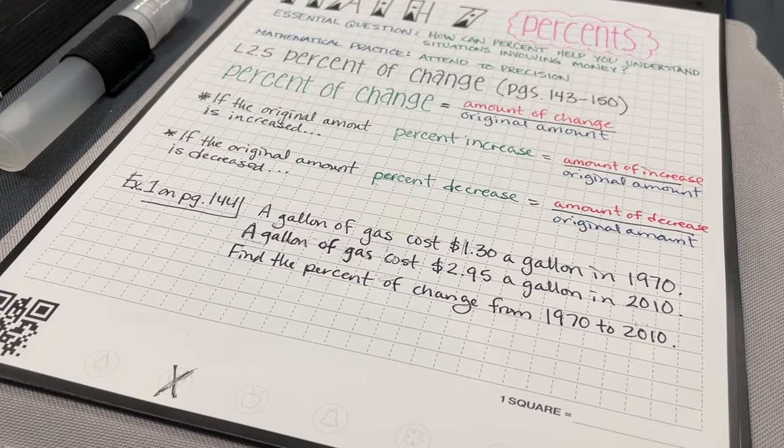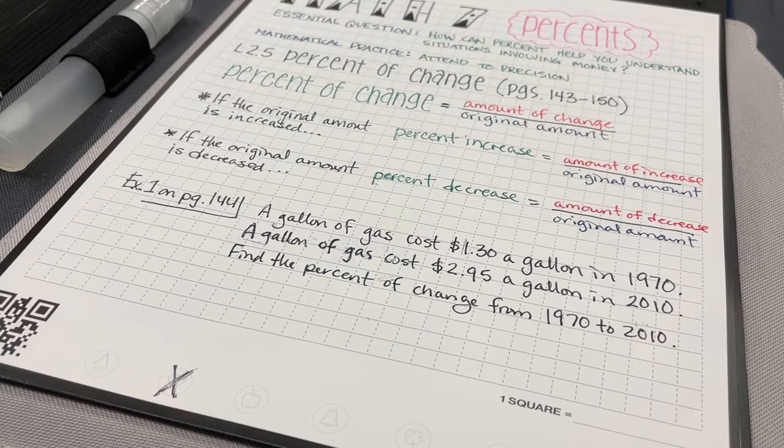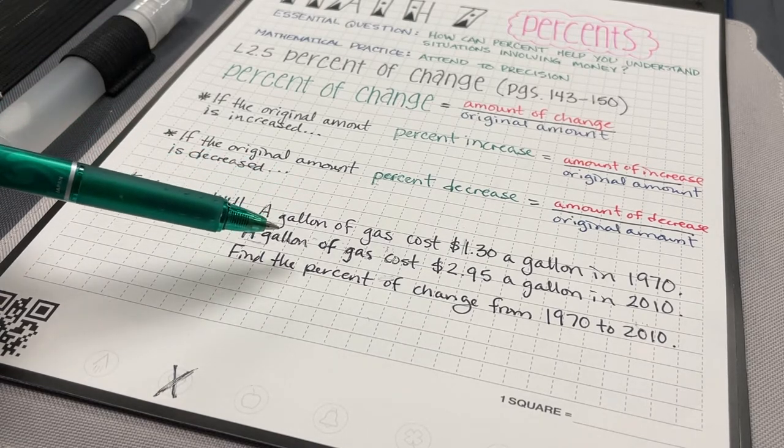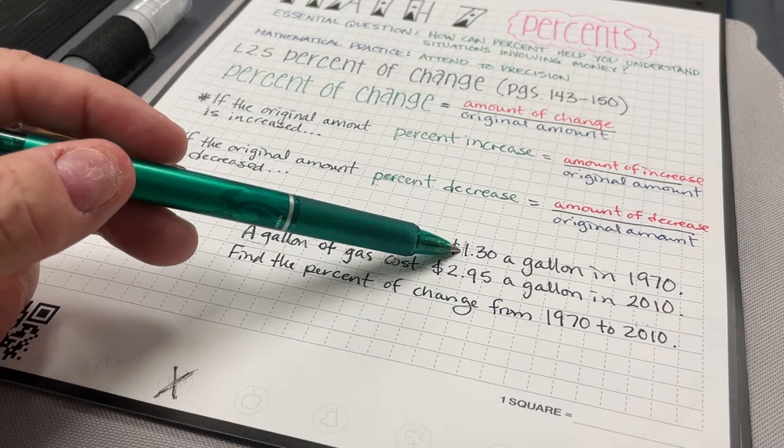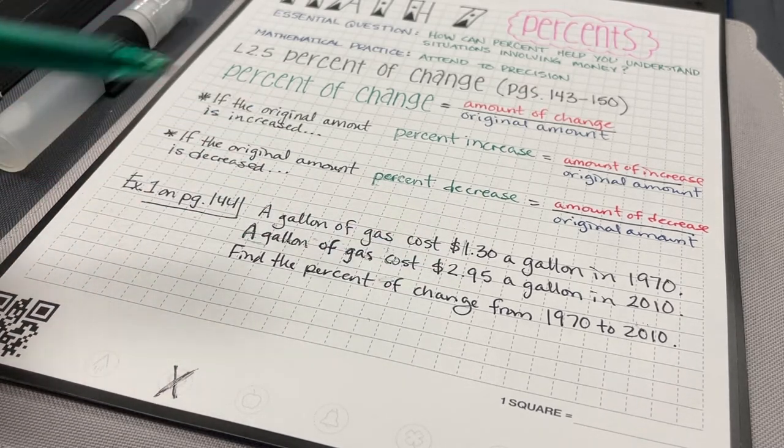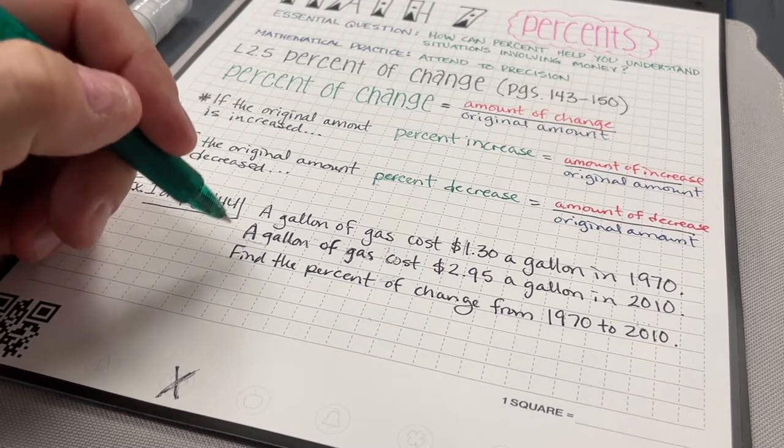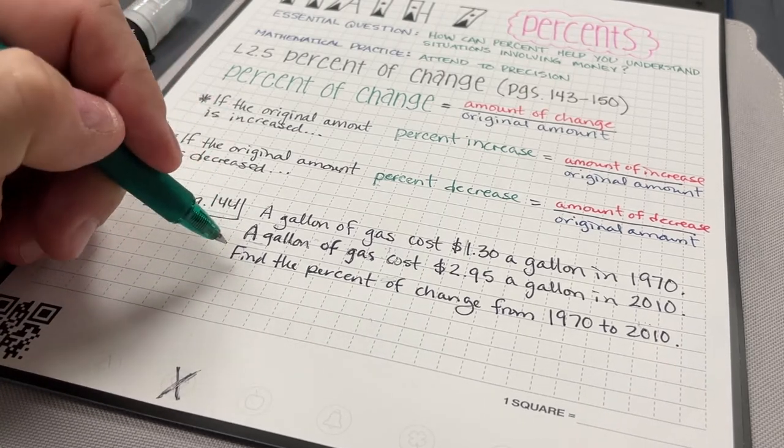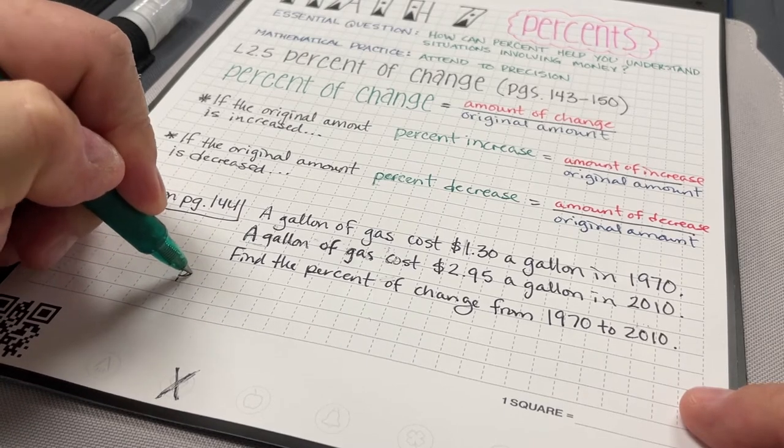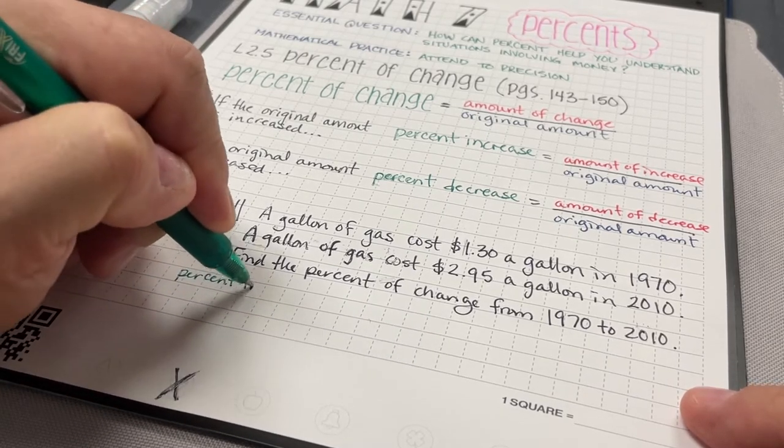So the way that I can do that is, first of all, I want to think about is it a percent increase or decrease? Well, from 1970 to 2010, the price of a gallon of gas went up. So I have a percent increase.